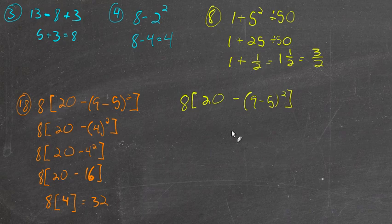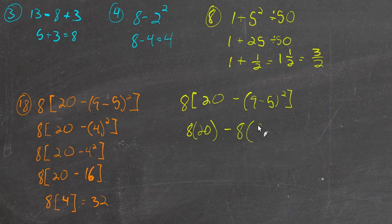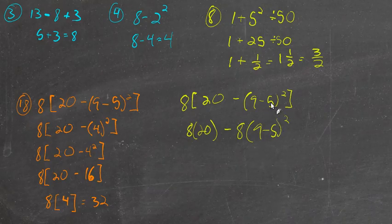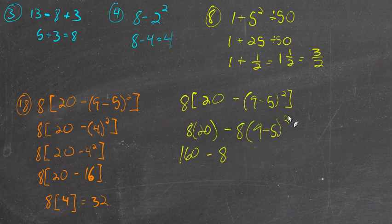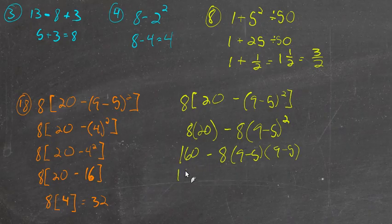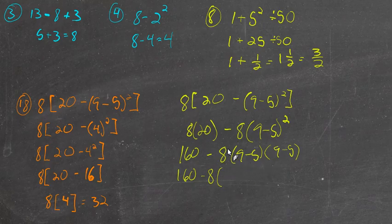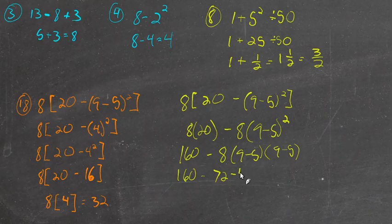I don't have to do these parentheses first. I could distribute this 8 first: 8 times 20. Right? But I also have to distribute this. So it's also minus 8 times 9 minus 5 squared. This isn't the way that I'd prefer to do it because it's just more complicated. But you could do, let's see, 8 times 20 is going to be 160 minus, and I could just multiply these two factors together. This just means two factors of this. So we could just do 9 minus 5 times 9 minus 5. We could multiply this 8, distribute it through there. So we could do that. 72 minus 40.